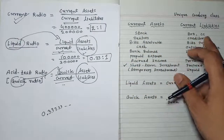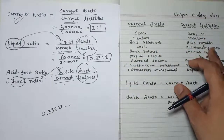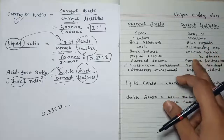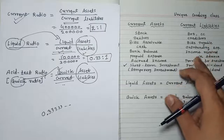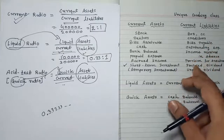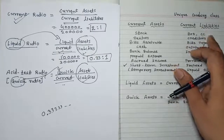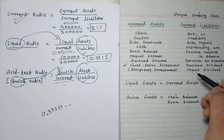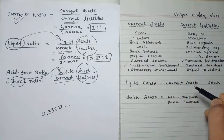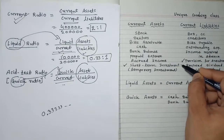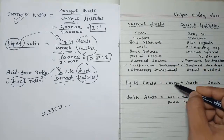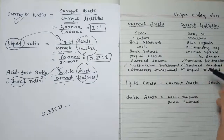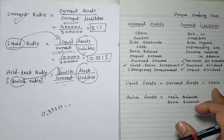Current liabilities include: creditors, bills payable, outstanding expenses, and income received in advance. Additionally, remember these important ones that students often miss: provision for taxation, proposed dividend, and unpaid dividend — these are all current liabilities.